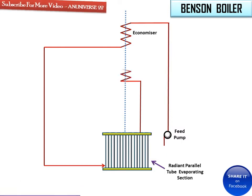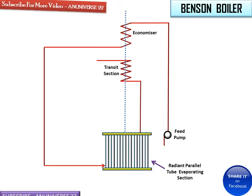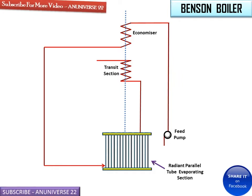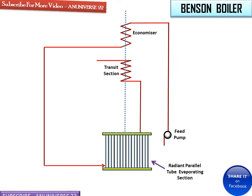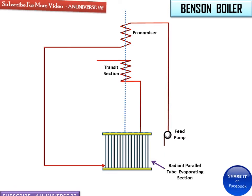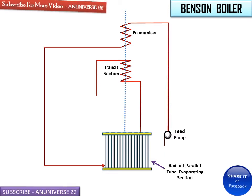This is the transit section, also called the convective or convection evaporator. The remaining water is evaporated in the convection evaporator or transit section, absorbing heat from hot gases by convection. In the convective evaporator, convection is used to transfer heat from the flue gases to the water, and the water is completely evaporated in this chamber.